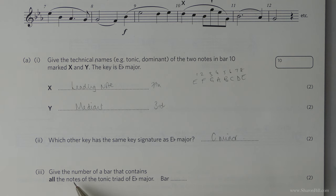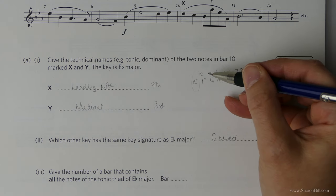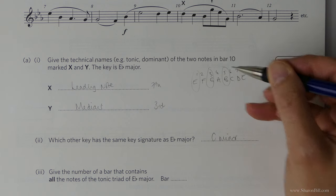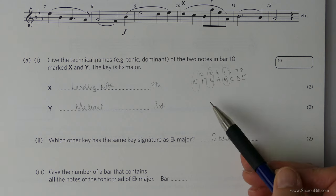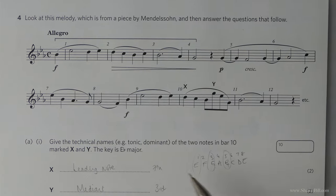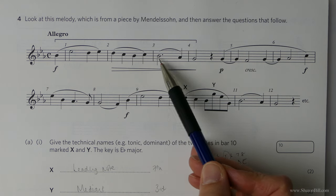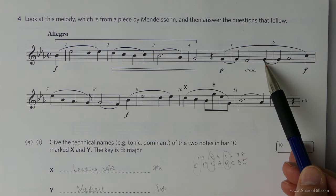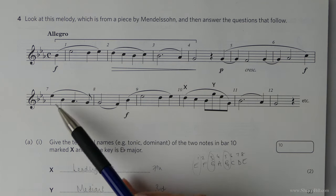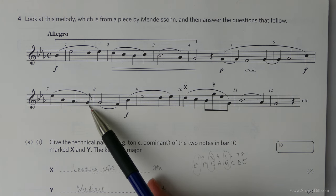Now then, give the bar number that contains all the notes of the tonic triad of E-flat major. We know the tonic triad is the first, the third and the fifth. So we're looking for an E, G, B. Let's have a look where we can see all of those. We've got an E but nothing else, B but nothing else, G but nothing else. None of those fit. We've got an E, a B and a G. So number seven will answer.